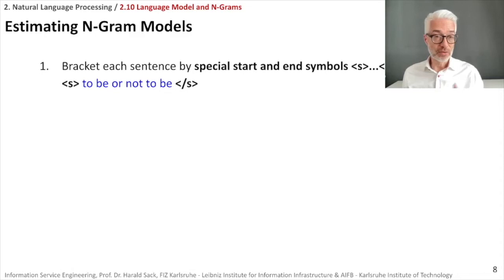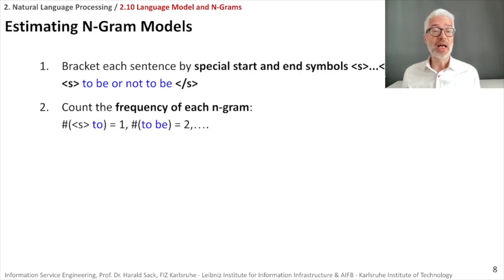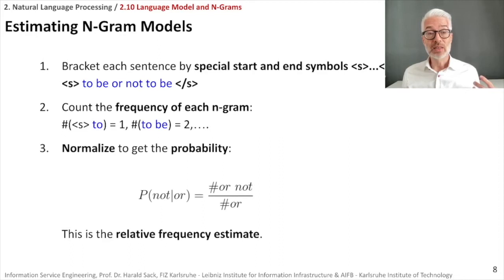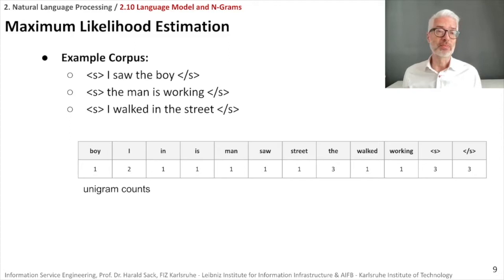Now let's estimate n-gram models. The first thing, we already did that. Each sentence is bracketed by a special start and end symbol. Now we count the frequency of each n-gram. So we start with the start symbol plus the first word in our sentence, then the next would be the next bigram and so on. For all of these n-grams then we are counting simply the frequency. In the end we are normalizing the frequency, and then we have the relative frequency estimate, which comes close to a probability.